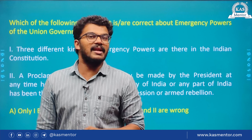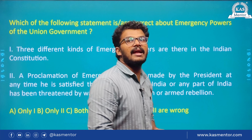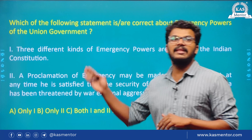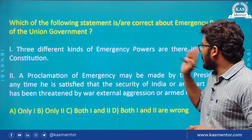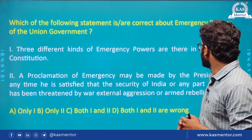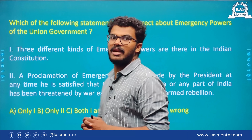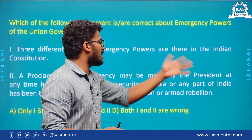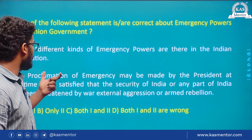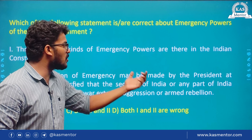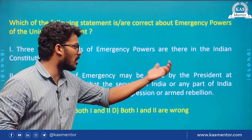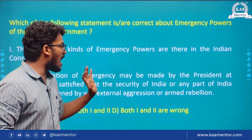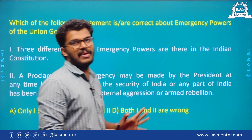Which of the following statements are correct about the emergency powers of the Union Government? A proclamation of emergency may be made by the President at any time he is satisfied that the security of India or any part of India has been threatened by war, external aggression, or armed rebellion.